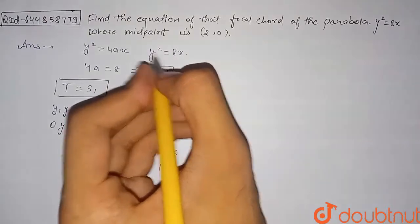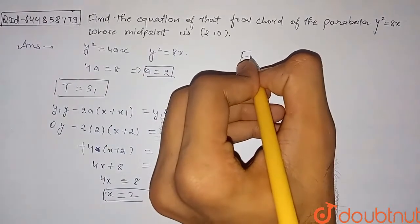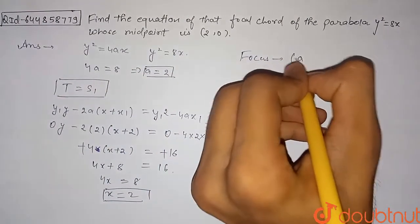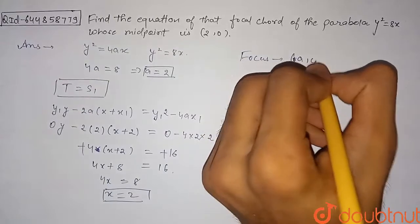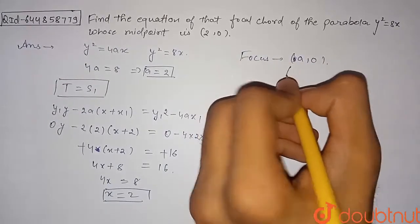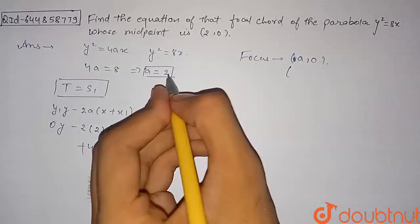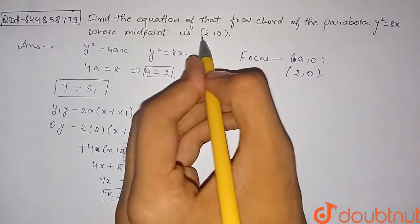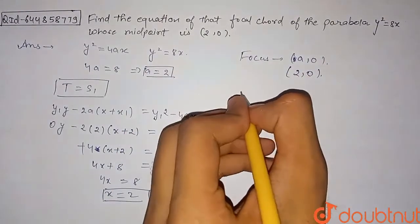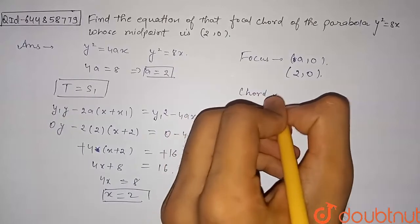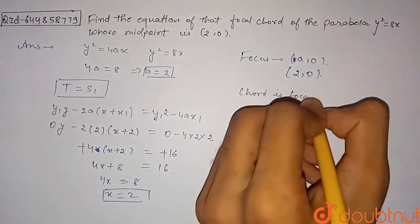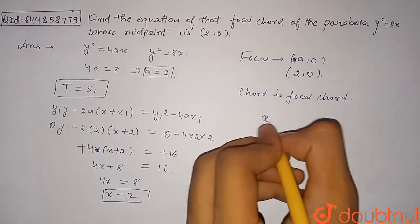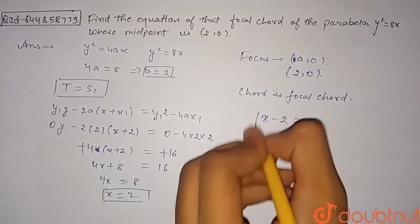They also said this is a focal chord. The coordinate of focus for this general parabola y² = 4ax is (a, 0). So the focus for our parabola is (2, 0), which is exactly the midpoint. Therefore the chord is indeed a focal chord, and the answer is x − 2 = 0.